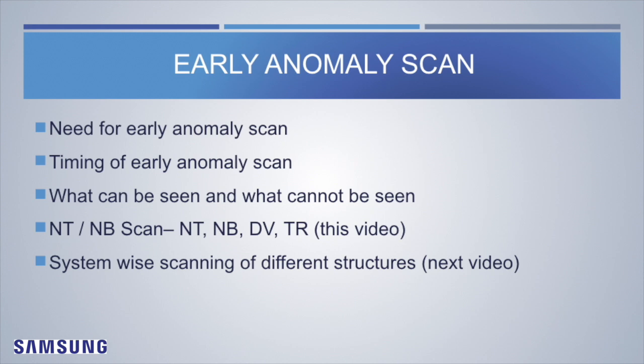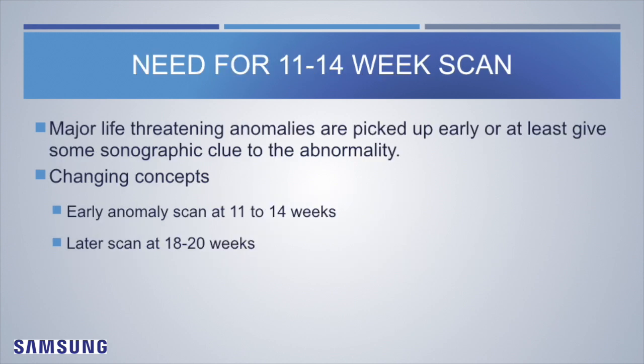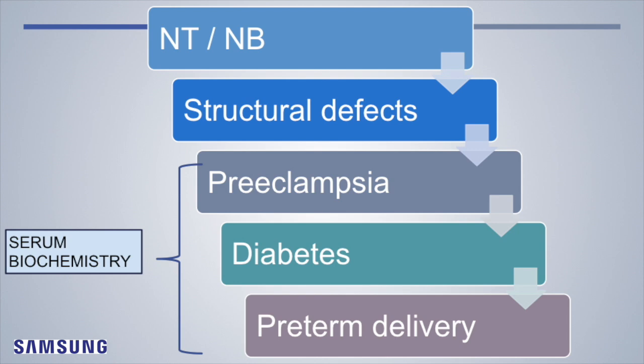Major life-threatening anomalies are picked up early or at least give some sonographic clue to the abnormality, and that's why we should scan all patients between 11 to 14 weeks. The changing concept is now to do one scan at 11 to 14 weeks as an early anomaly scan and then the later scan at 18 to 20 weeks. What started as the NT and NB scan has evolved into detecting structural defects, and with the help of serum biochemistry we can also diagnose the risk of pre-eclampsia, diabetes, and preterm delivery.